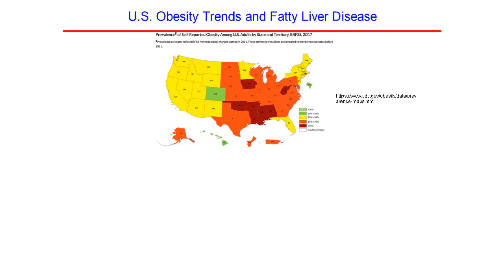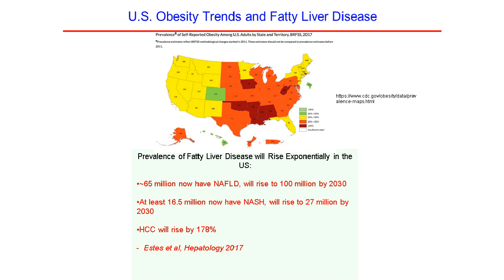This map depicts the obesity trends in the United States, showing the intense prevalence of obesity. Associated with that is a rising prevalence of fatty liver disease, projected to rise exponentially over the next few decades. Currently, an estimated 65 million Americans have one form of fatty liver disease, which will rise to 100 million in the next 15 years. Of this 65 million, at least 16.5 million now have NASH — the condition which merits attention and possibly treatment. This will rise to 27 million by 2030, and hepatocellular carcinoma is projected to rise precipitously as well.